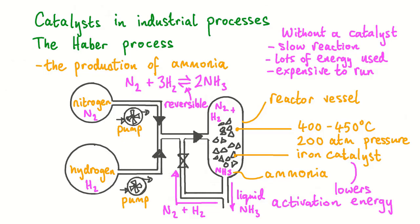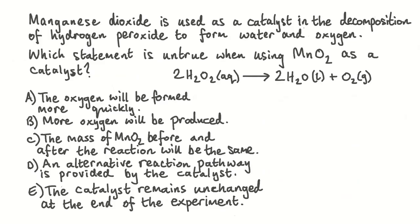The economic benefit of using a catalyst is substantial, and it will often outweigh the cost of the catalyst. Now let us look at a question to test our understanding. Manganese dioxide is used as a catalyst in the decomposition of hydrogen peroxide to form water and oxygen. Which statement is untrue when using MnO2 as a catalyst? 2H2O2 (aq) → 2H2O (l) + O2 (g). A: The oxygen will be formed more quickly. B: More oxygen will be produced. C: The mass of MnO2 before and after the reaction will be the same. D: An alternative reaction pathway is provided by the catalyst. E: The catalyst remains unchanged at the end of the experiment.